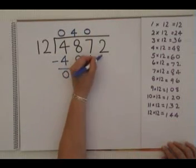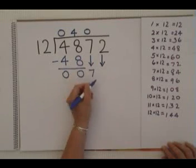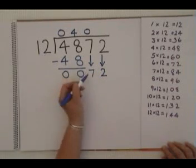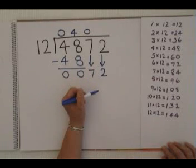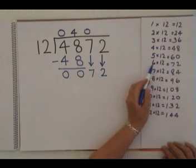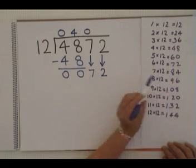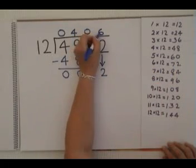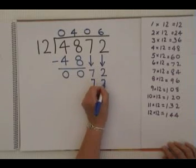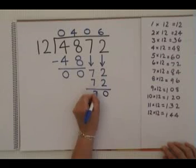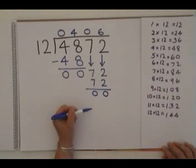To continue the sum we bring down the 2 and we say how many times does 12 fit into 72? Looking at our times table we see that the answer is 6. 6 times 12 is 72. So we write 6 up here, write 72 down here, take them away from each other and it gives us the answer of nothing.